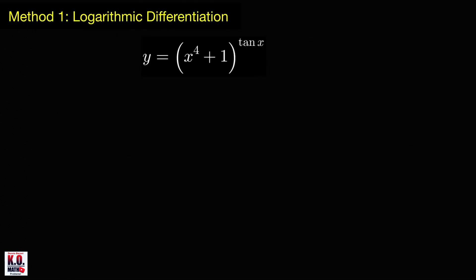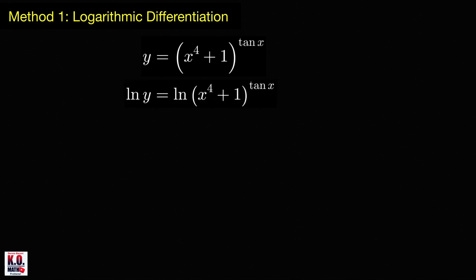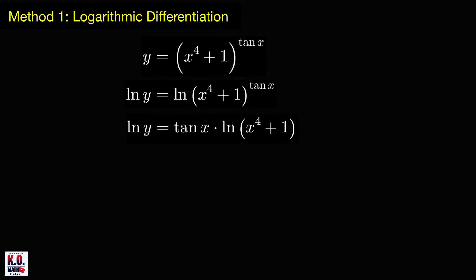Let us find the derivative using logarithmic differentiation. The first step in this procedure is to take the absolute value of both sides. But in this case, we know that this base here is greater than zero, so we don't need to take the absolute value of both sides before we take the logarithm. So we can take the logarithm of both sides and we'll get ln of y equal to ln of the right-hand side. Using a property of ln, this power can be placed in front of the ln, so we write the right-hand side as tangent x times ln of the quantity x raised to 4 plus 1.